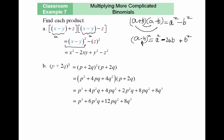So to evaluate x minus y squared, I write it as the first term squared, x squared, minus the 2ab middle term which is 2xy, plus the second term squared, y squared. And here is my final result. This demonstrates using the same set of properties for more complicated products.